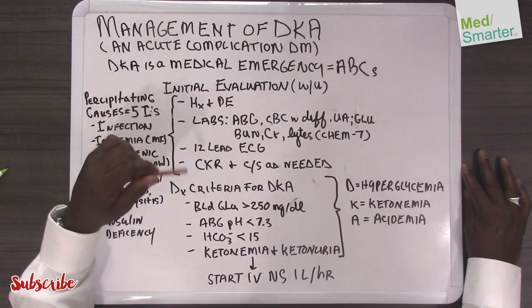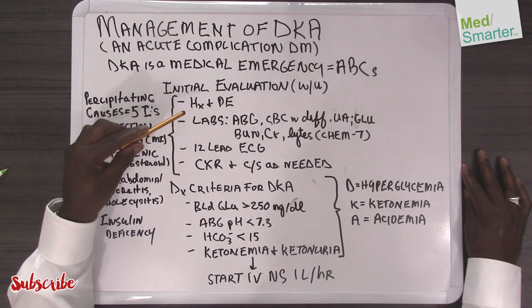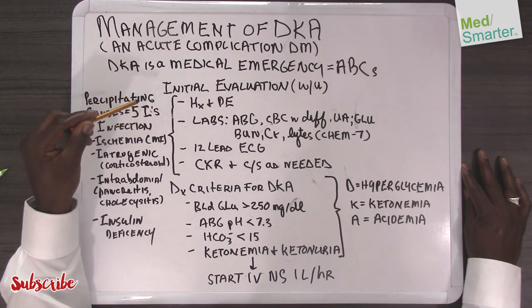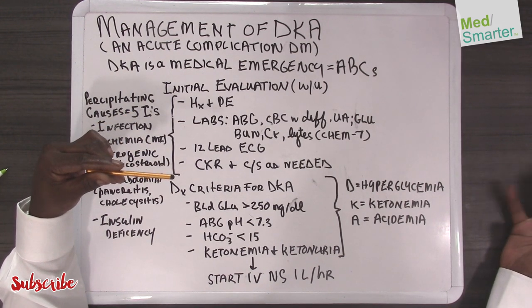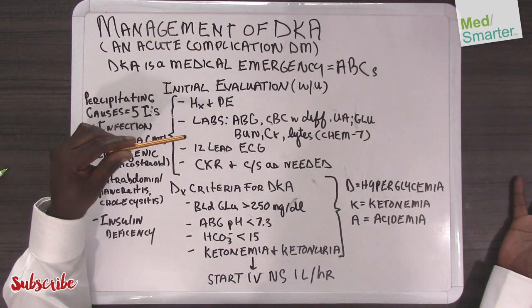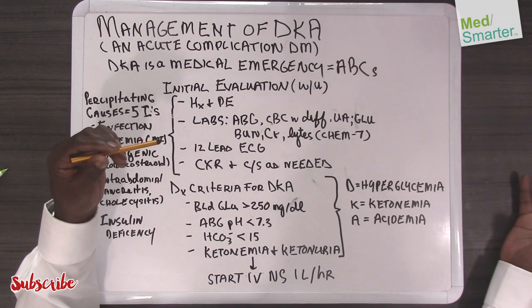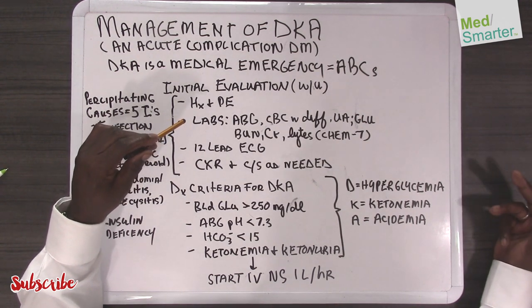In doing this initial evaluation you're doing a couple of things: you will be able to make the diagnosis of DKA as well as assess the precipitating cause. Typically the classic presentation will be a child, an adolescent, or that subpopulation of type 2 diabetics that will present with several days of polyuria, polydipsia, abdominal pain, nausea and vomiting. On their physical examination they will be hypotensive.